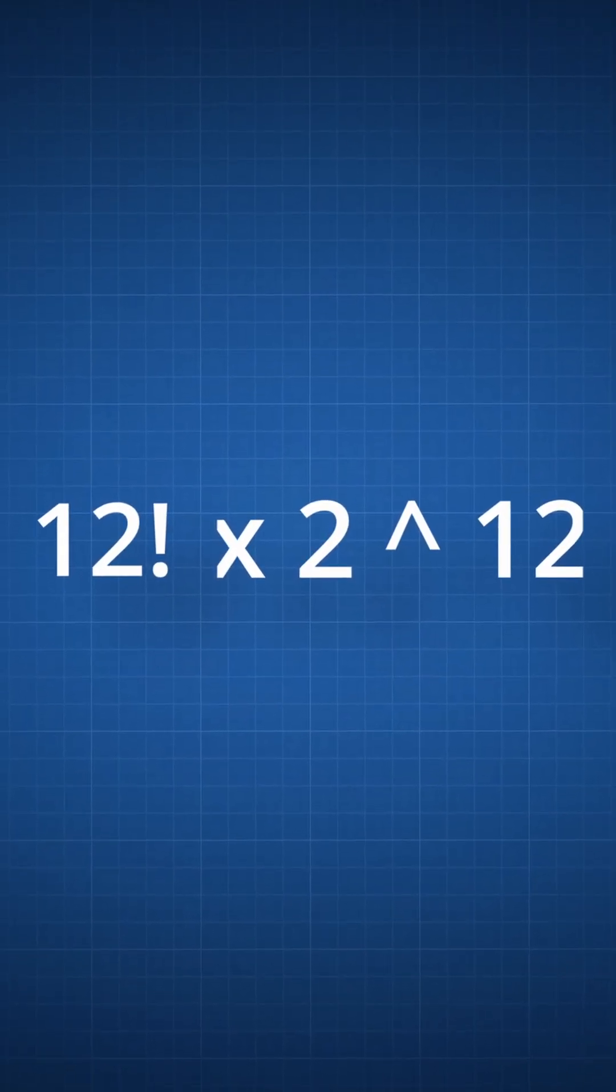But each edge can be flipped two ways, so you have to multiply that by 2 raised to the power of the amount of pieces there are, in this case 12.